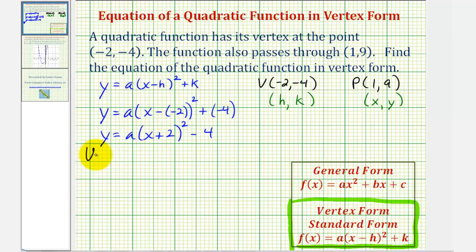So again, using the point one comma nine, we would have nine equals a times the quantity one plus two squared minus four. So we'll have nine equals, this is going to be three squared or nine, nine times a is nine a minus four. We'll go ahead and add four to both sides of the equation. That would give us nine a equals 13.